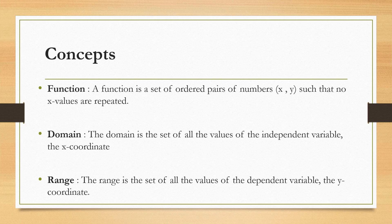Now let's get on to the concepts of our particular topic. First we will start with what is a function. A function is a set of ordered pairs of numbers x and y, such that no x values are repeated. For every x, what is the value of y? Very strictly, x values are not repeated. Let's have the idea of domain and range. The domain is a set of all values of the independent variable, the x coordinate. So it is called the independent variable. What is range then? The range is a set of all values of the dependent variable, the y coordinate. y is always a dependent variable and x is the independent variable. This is the basic concept of a function, domain and range.